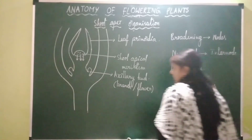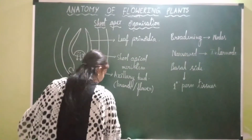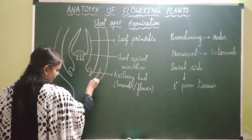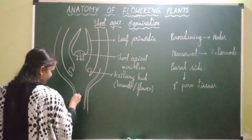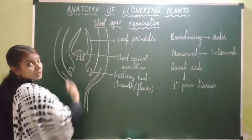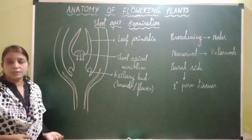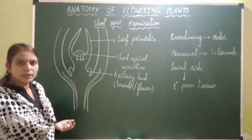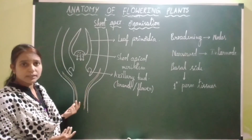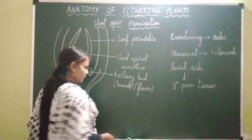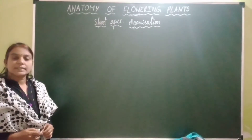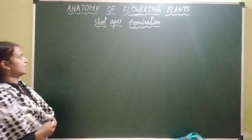Vascular tissues like xylem and phloem get differentiated from the shoot apical meristem. This is about shoot apex organization, and to explain it, three different scientists proposed three different theories.